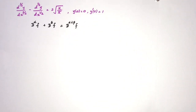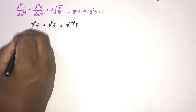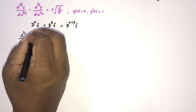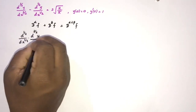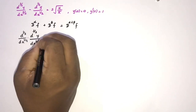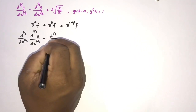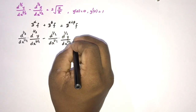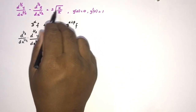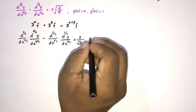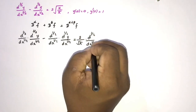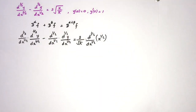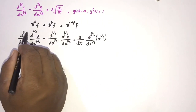We are going to take the half derivative of both sides. So we can write d^(1/2)/dx^(1/2) applied to d^(3/2)y/dx^(3/2), minus d^(1/2)/dx^(1/2) applied to d^(1/2)y/dx^(1/2), and the right-hand side becomes (2/√π) · d^(1/2)/dx^(1/2) of x^(1/2).